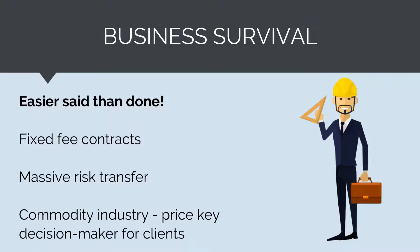On top of this, construction contracts usually involve significant risk and responsibility transfer to the contractor, meaning the contractor is responsible for all sorts of known unknowns and unknown unknowns, and it's their responsibility to manage and budget for these. Finally, construction contracting is often seen as a commodity industry where contractors are selected primarily based on price. Clients often see little difference between contractors' offers other than what they quote, meaning the contractor who has under-quoted and under-estimated risks is likely to win the project.